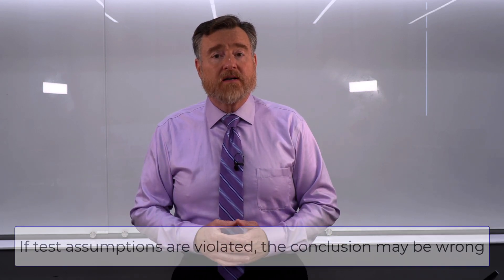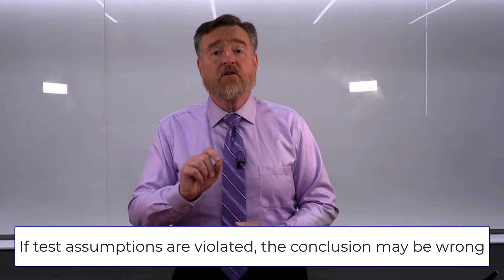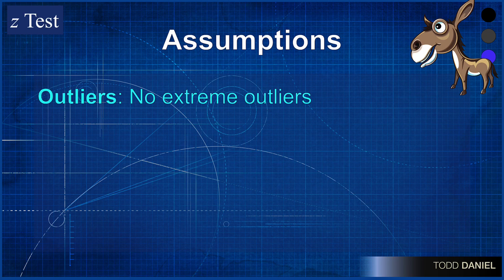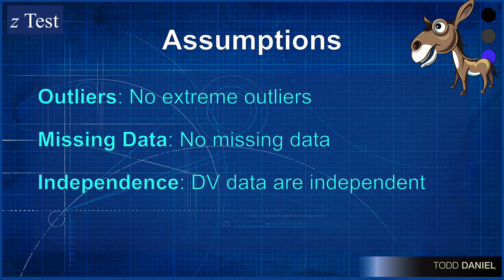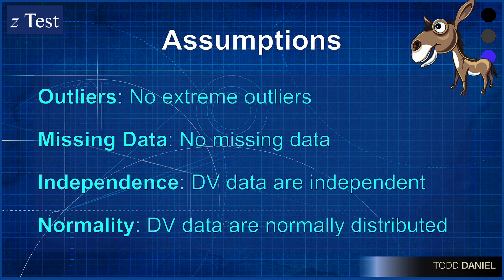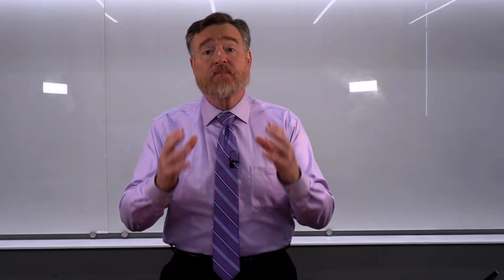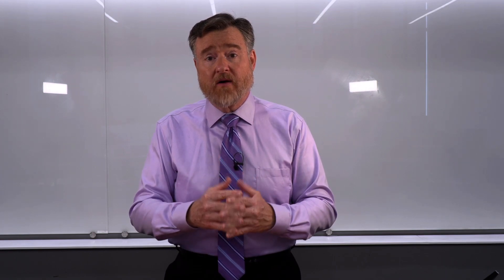Every statistical test is built on assumptions. There are four assumptions for our one-sample z-test. Number one, there are no extreme outliers in our data set. If there are, we could remove or, better yet, Winsorize those outliers. Number two, no missing data. If data are missing, we may need to impute that data. Third, independence — the dependent level data are independent of each other; no score is affecting other scores. And fourth, normality — the dependent variable data are normally distributed. If it passes the normality check, we are good to go. If not, we need a large enough sample size to invoke the central limit theorem.